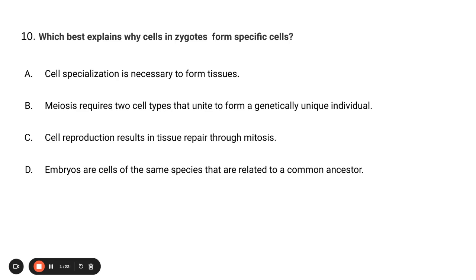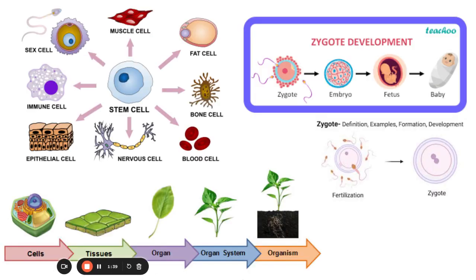B says meiosis requires two cell types that unite to form a genetically unique individual. Well, that's true, but we're beyond that when you're talking about the formation of zygote. Zygote is the initial first cell that's created after fertilization. So you already have egg and sperm cells at that time.